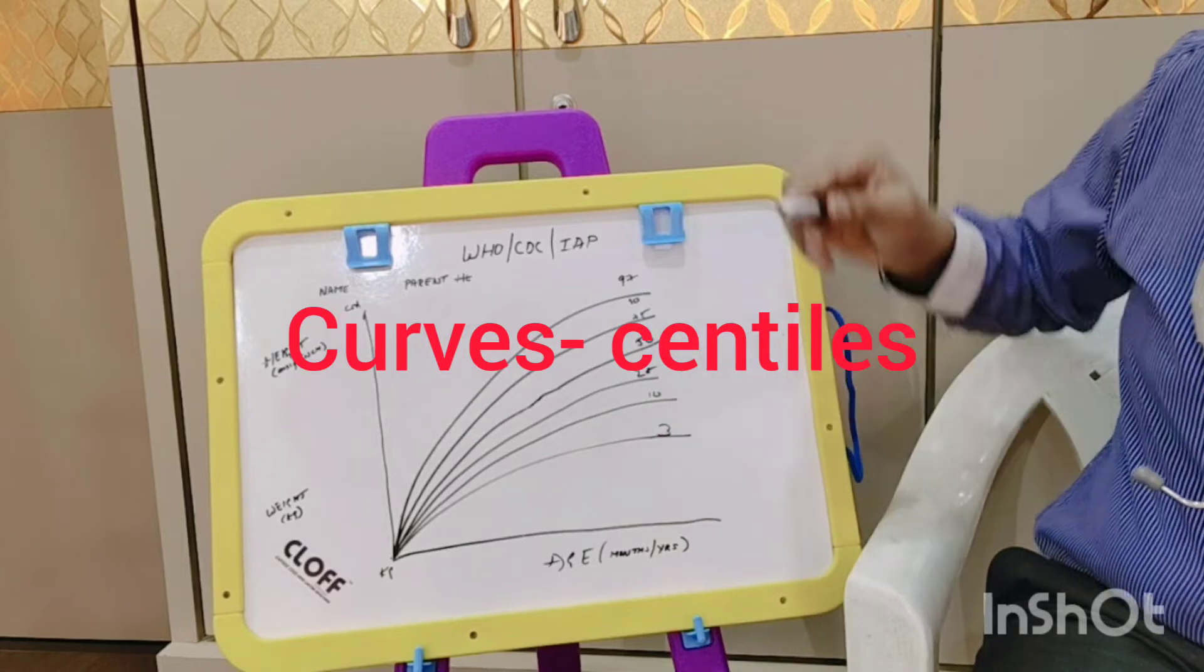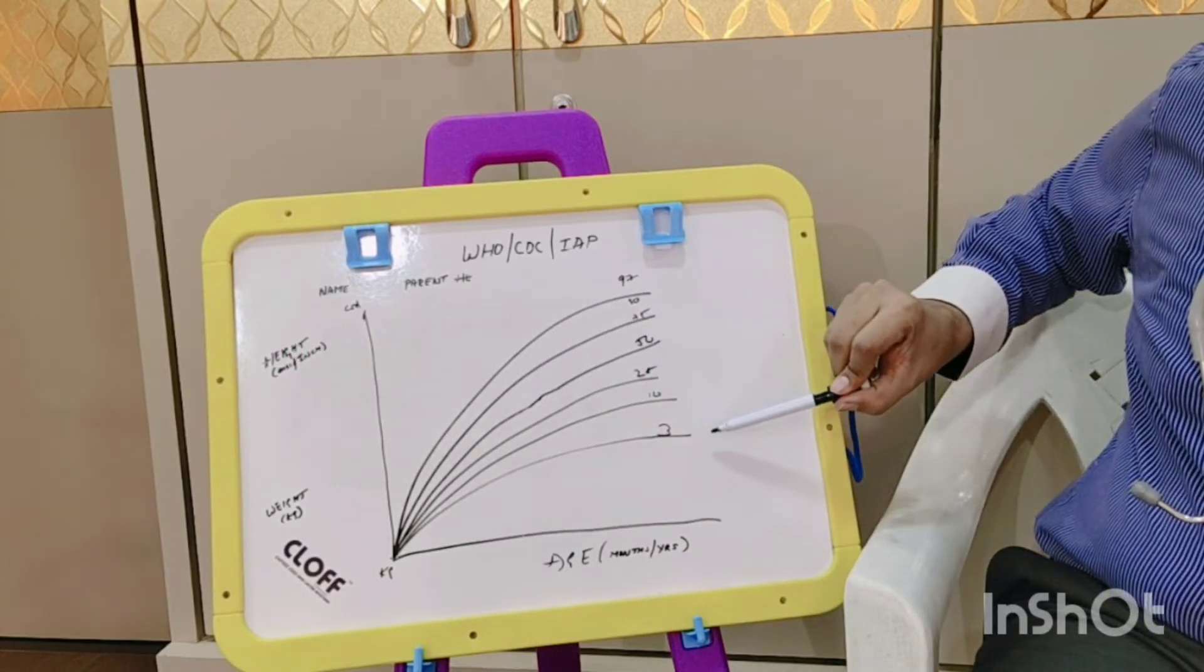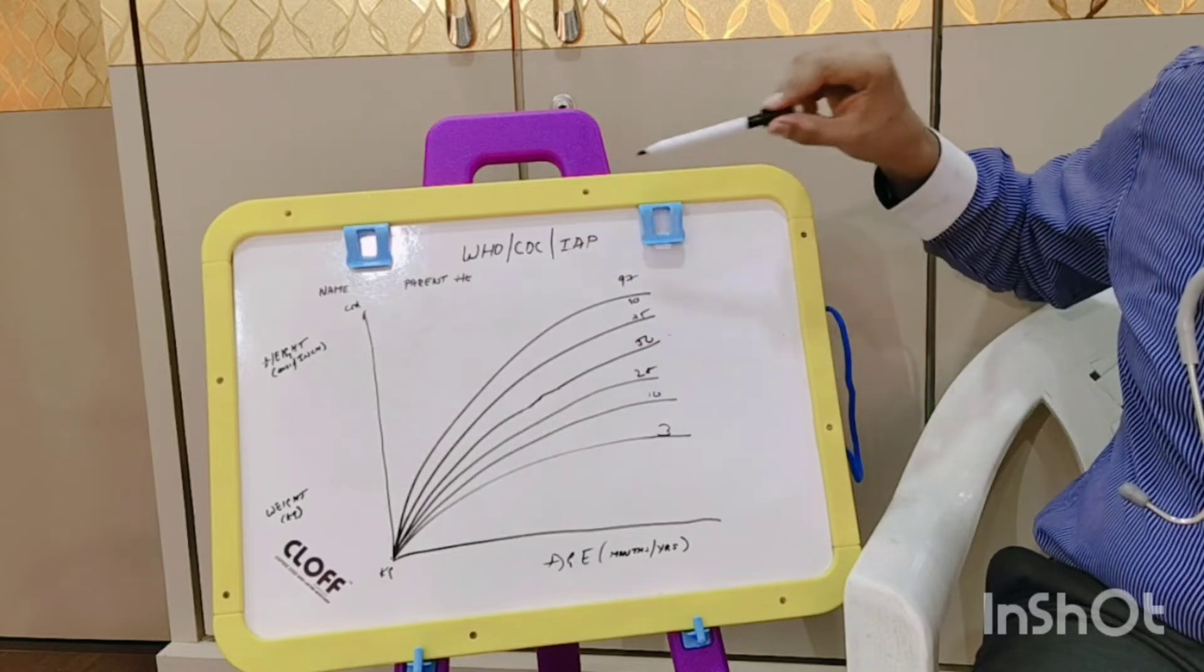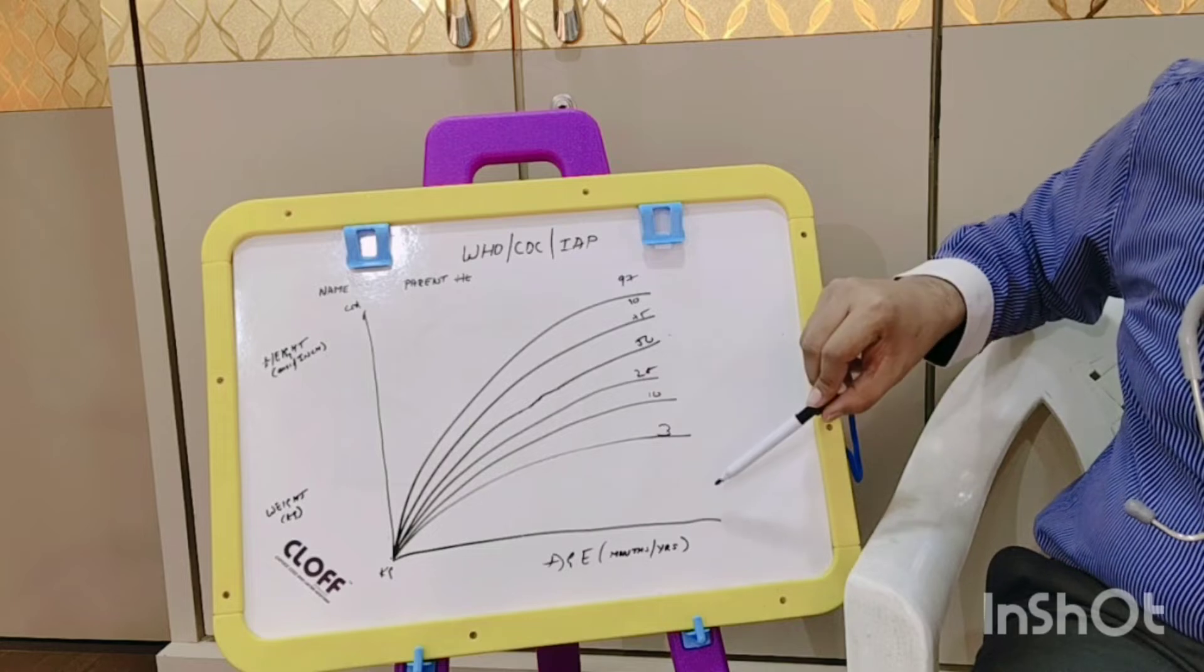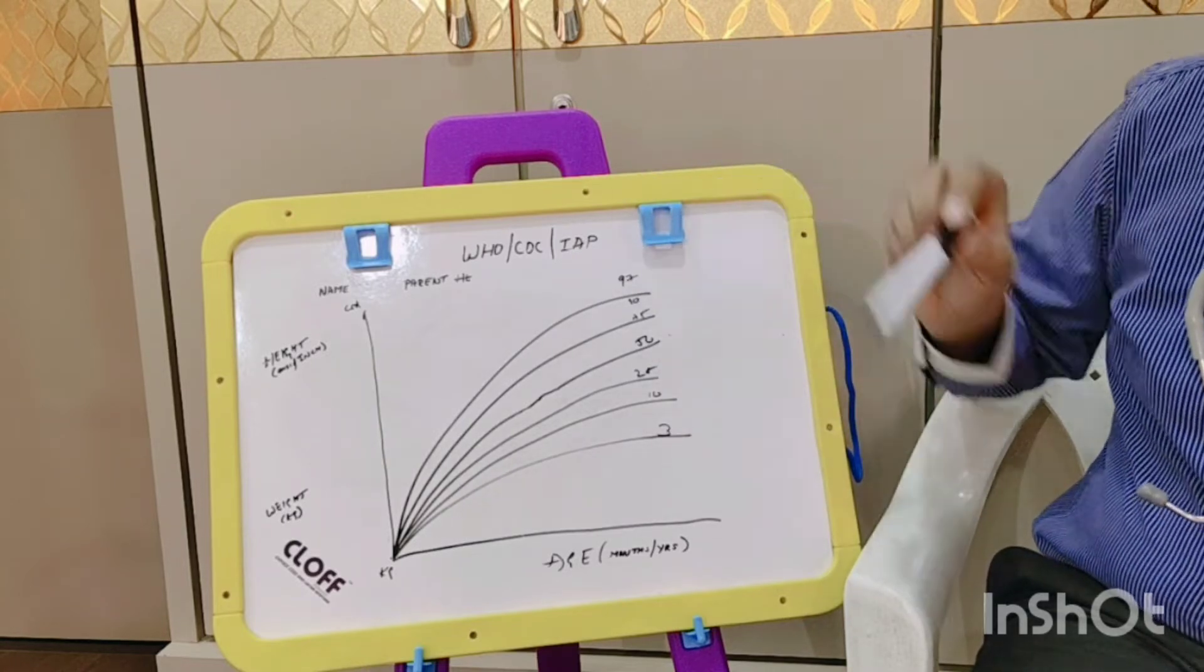These are called curves. In these curves, height and weight can be plotted based on various percentiles: the 50th percentile, 75, 90, 97, and similarly 25, 10, and 3. This depicts where your child falls.